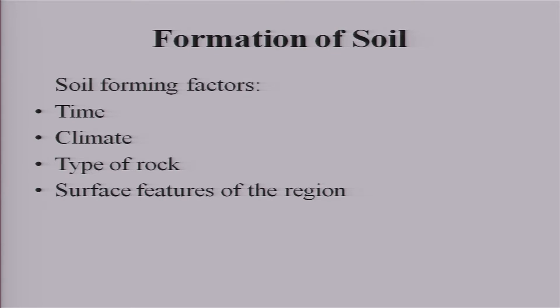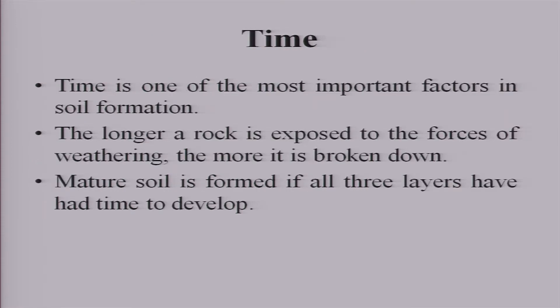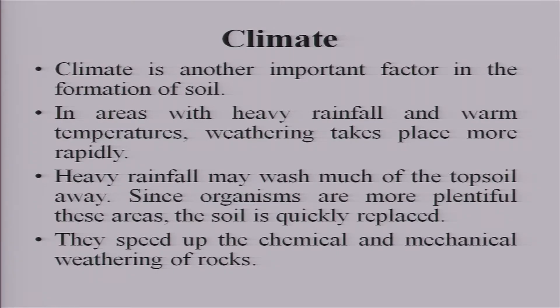The factors controlling soil formation include time, climate, type of rock, and surface features of the region, or topography. Time is important — the more time available, the more reactions occur and the more mature the soil formed. Climate is also key: in areas with heavy rainfall and warm temperatures, weathering takes place rapidly, while in desert regions it can be slow.